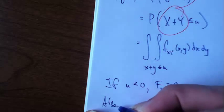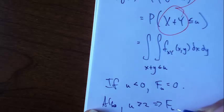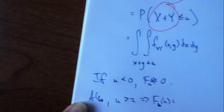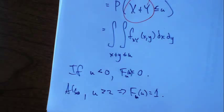Also u greater than 2 implies f sub u of u is 1, because both of those max out at 1.